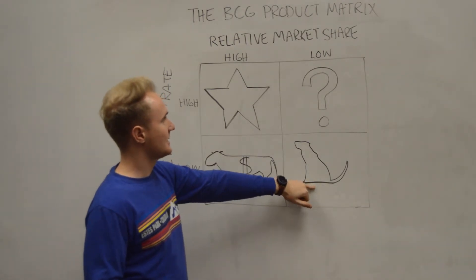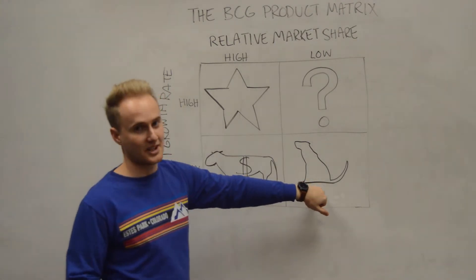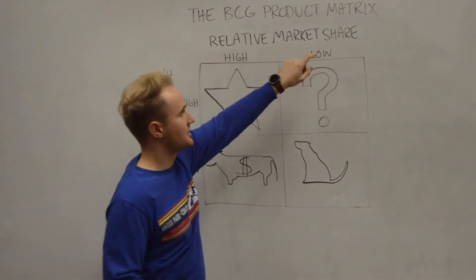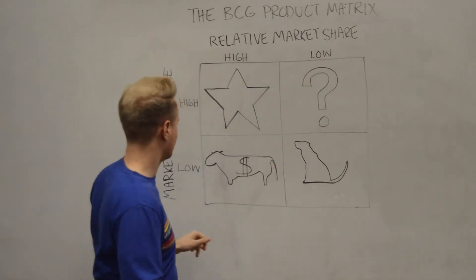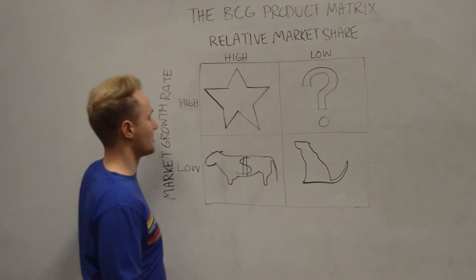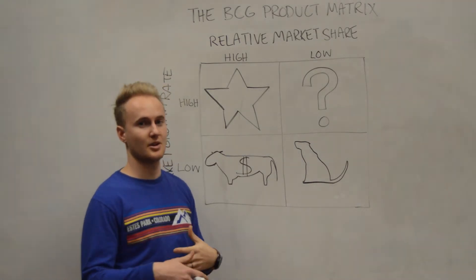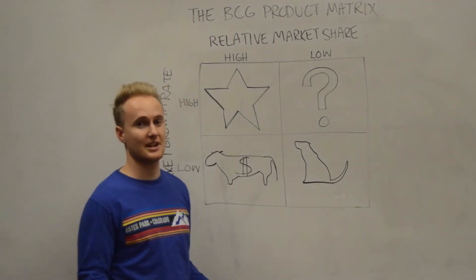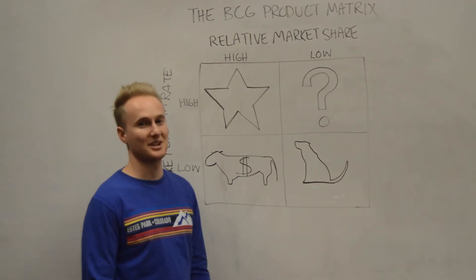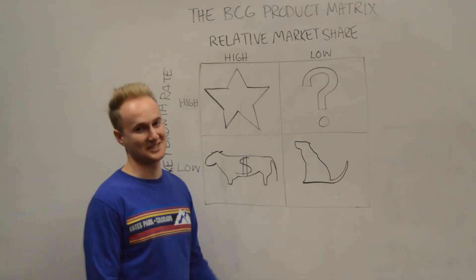The last quadrant is the dog section. The dog has low relative market share and low growth rate. It's not going to grow that much, and it doesn't generate that much cash. So even though it's a dog, we don't want it — we want dogs, but we don't want these dogs.